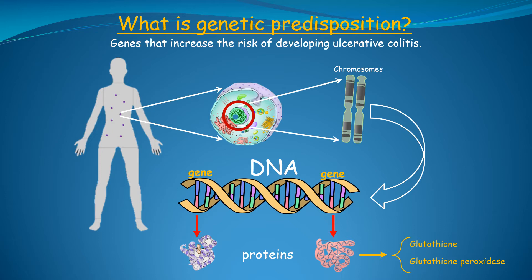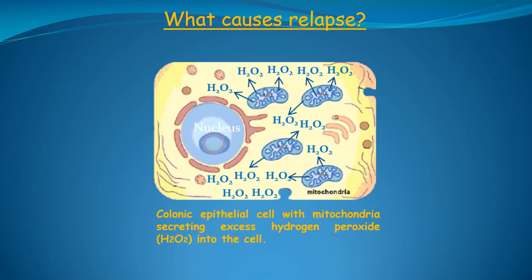In the next slide, we will discuss what the evidence indicates is the cause of relapse. It's critical to understand the mechanism of relapse, because if we can fix the problem leading to relapse, we can cure this disease. To understand this, we need to look at a single colonic epithelial cell. Recall that these are the cells that line the inner surface of the colon. Colonic epithelial cells contain many small structures called mitochondria, which are highlighted by the red square.